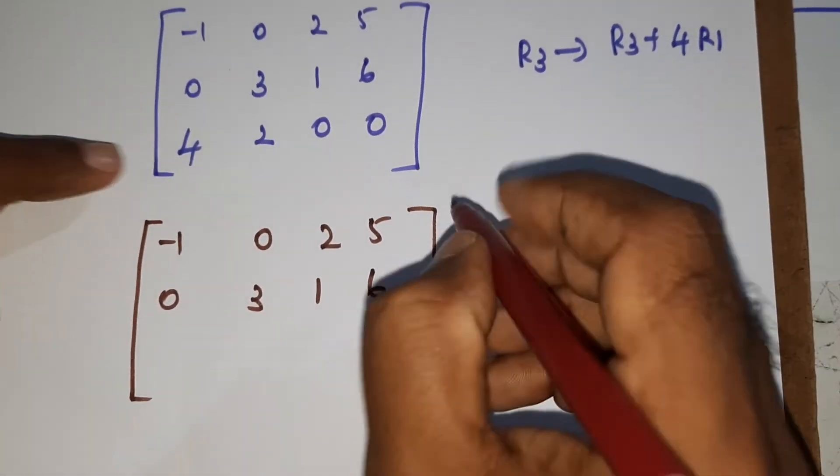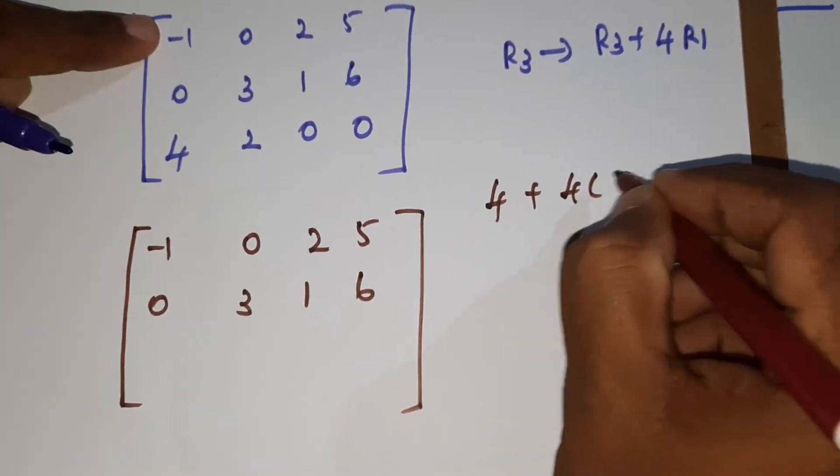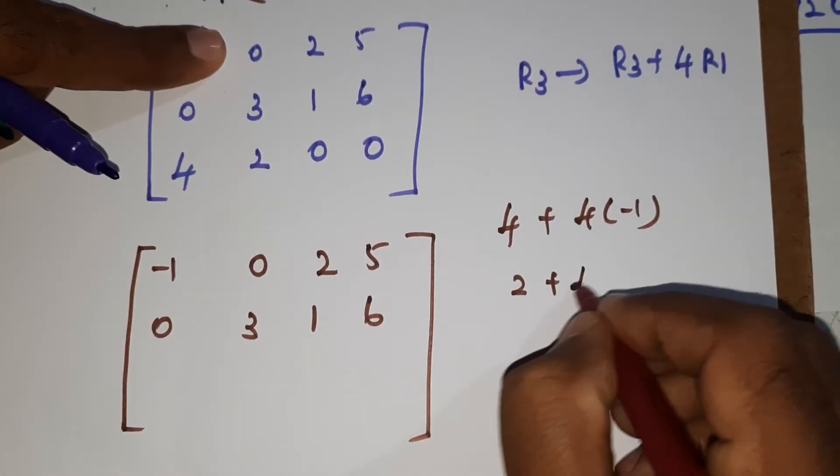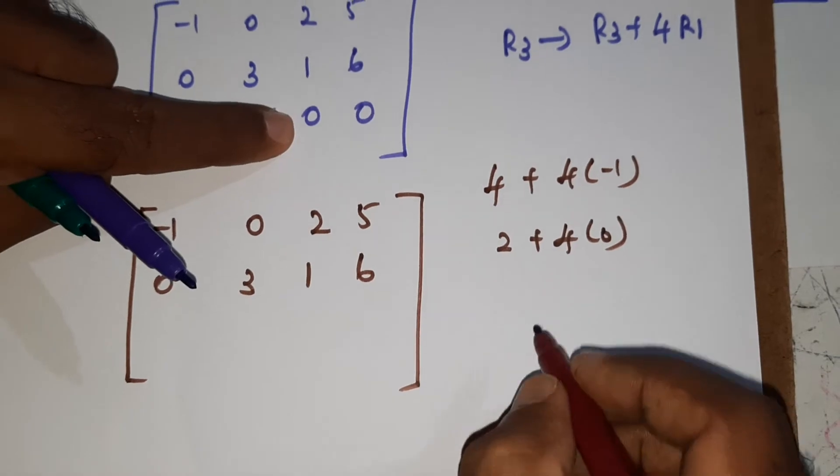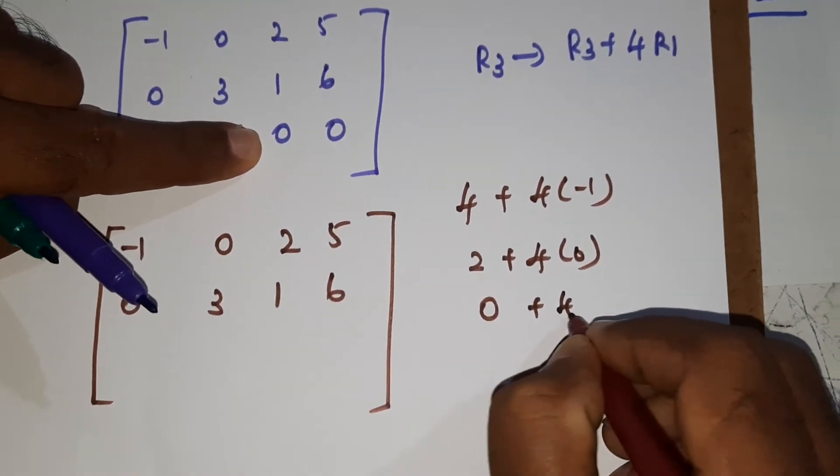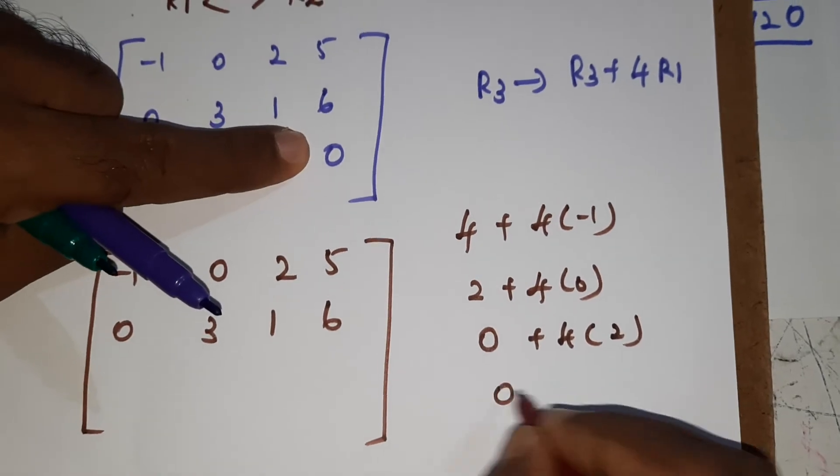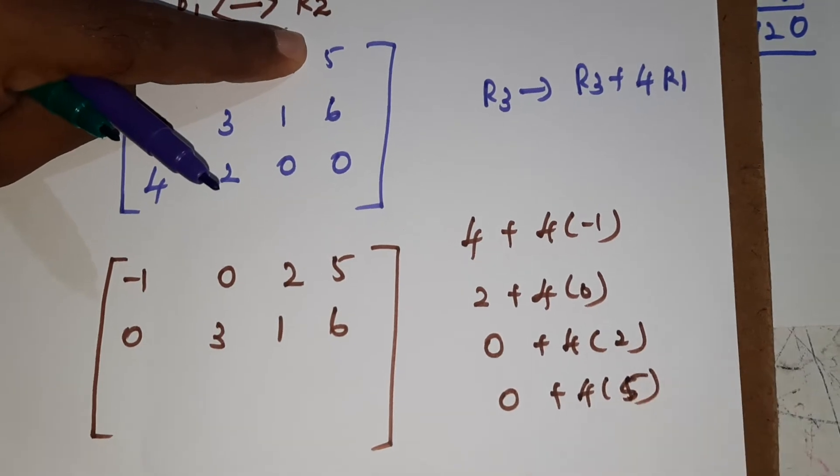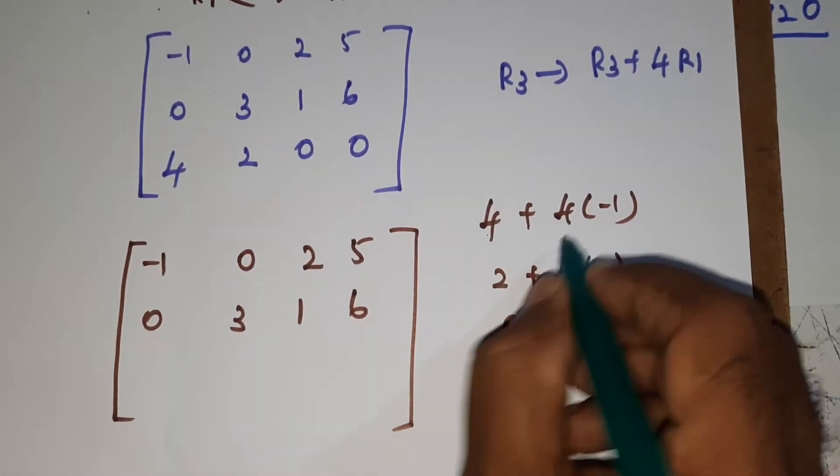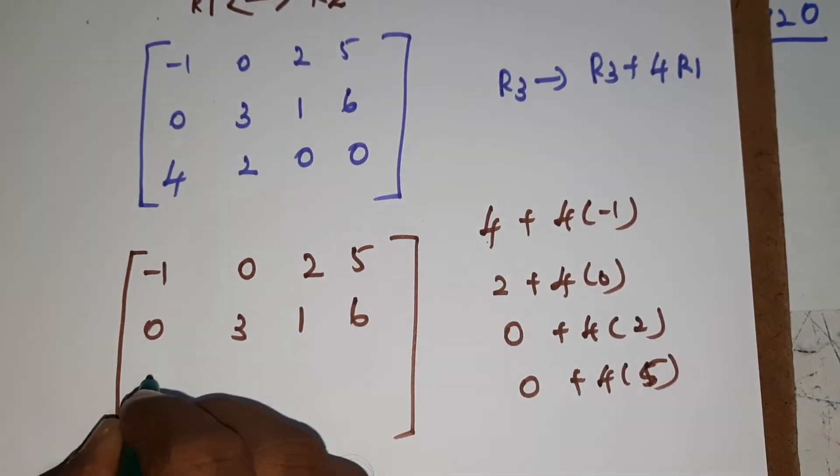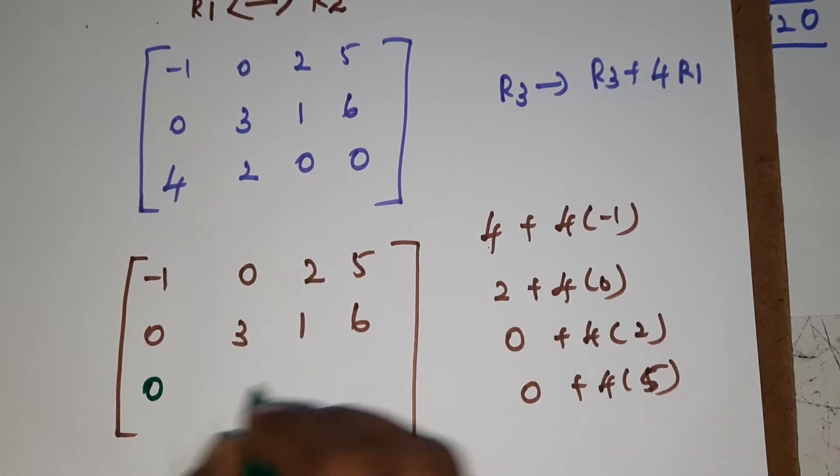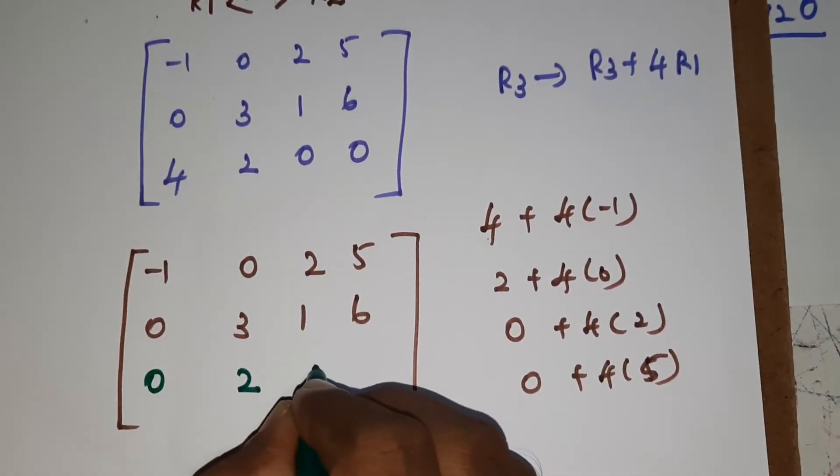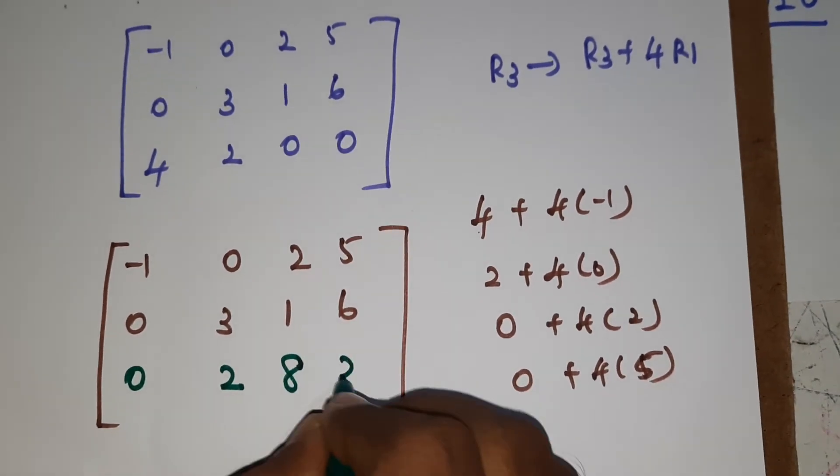R3, R3 plus 4 times minus 1. Next element, 2 plus 4 into 0, which is automatically 0. The next element, 0 plus 4 into 2. The next element, 0 plus 4 into 5. So 4 into 5.